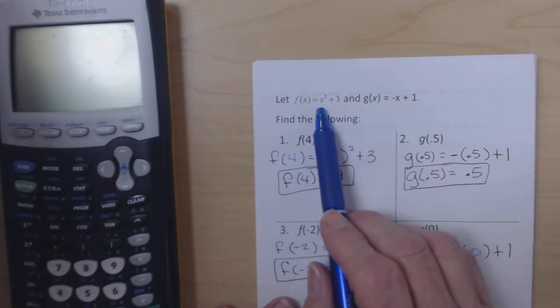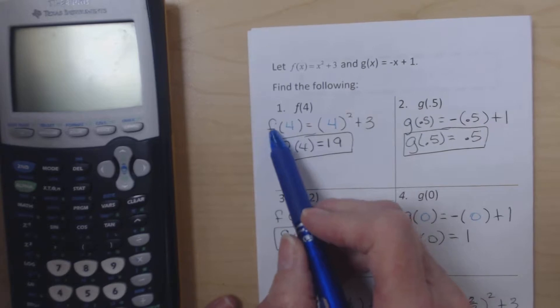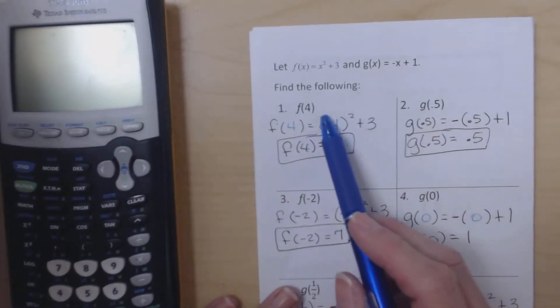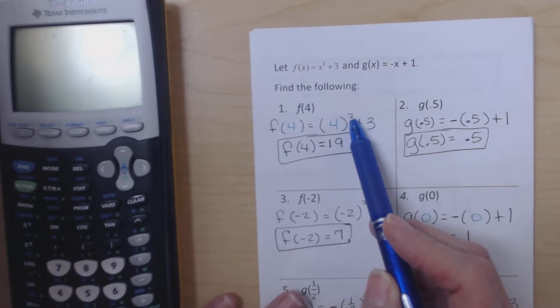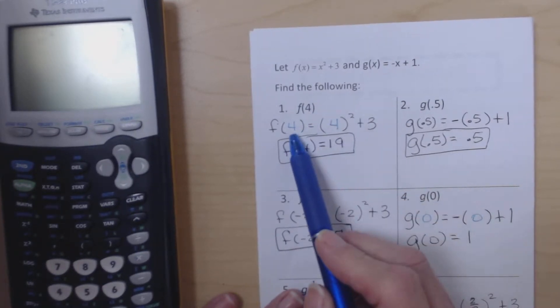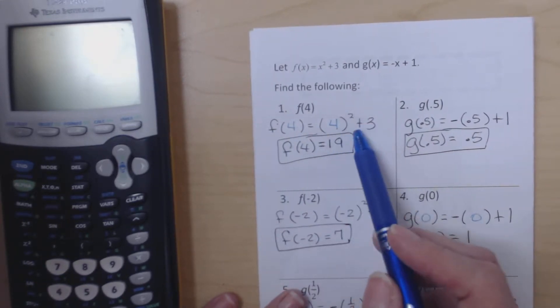f(x) equals x squared plus 3, and that's what we're going to use for the first example. We first make our skeleton. So x is being squared, so the parentheses is being squared. This tells us what goes inside our parentheses. So we put the 4 here. So f(4) equals 4 squared plus 3.